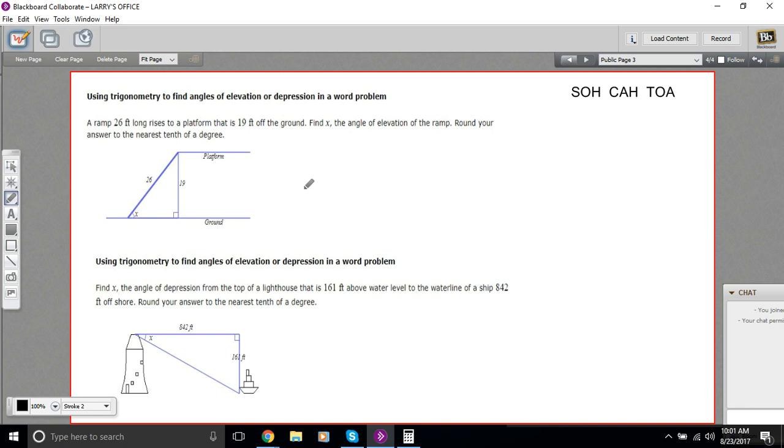Here we have a couple of problems about finding angles of elevation or angles of depression. In the first case, we have a ramp that goes up to a platform, and we want to know how much that ramp is elevated off the ground. What's this angle in here? That's the angle of elevation, how much this ramp has been raised up from being flat on the ground.